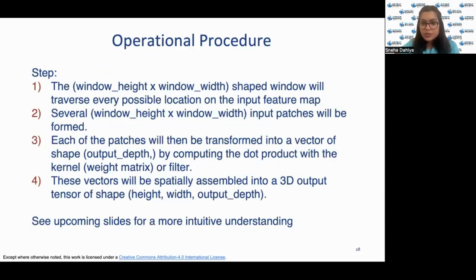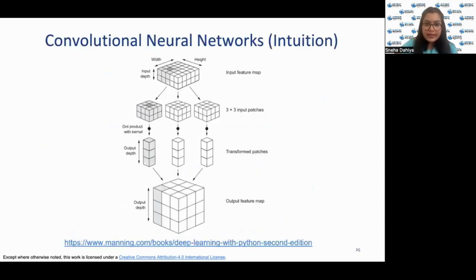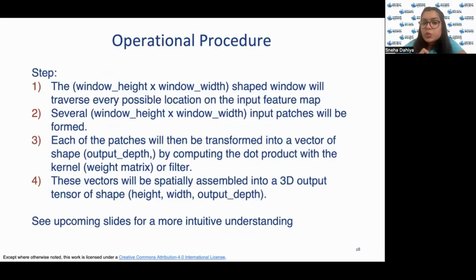Now talking about operational procedure, there are four steps to follow. These four steps basically articulate the four steps on the diagram on this slide. The first step includes a window of height and window width shape that will traverse every possible location on the input feature map. Several window height and window width input patches will be formed in the second step. In the third step, each of the patches that are formed will be transformed into a vector of shape of output depth by computing the dot product with the kernel, that is the weight matrix or filter. Finally, these vectors will be spatially assembled into a 3D output tensor of shape height, width and output depth. To have a more intuitive understanding of these steps, we'll see more in detail in the next slides.